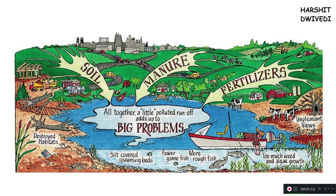The next source of pollution is the agricultural source of pollution, which also includes animal husbandry. Fertilizers are a very important agricultural pollutant. Fertilizers basically contain three elements: nitrogen, phosphorus, and potassium — we call it NPK. In India, urea receives heavy subsidy, and the other main fertilizers are muriate of potash and diammonium phosphate.